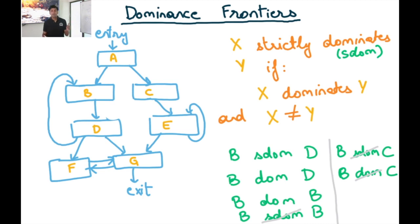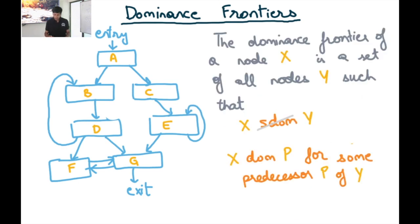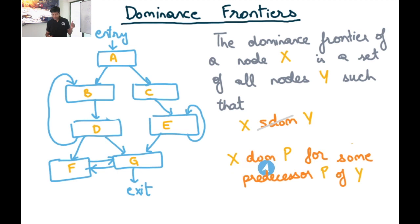Recall what the dominance frontier of X is: Y belongs to the dominance frontier of X if X does not strictly dominate Y but X dominates a predecessor P of Y. The dominance frontier of a node X is the set of all nodes Y such that X does not strictly dominate Y, but X dominates P for some predecessor P of Y.